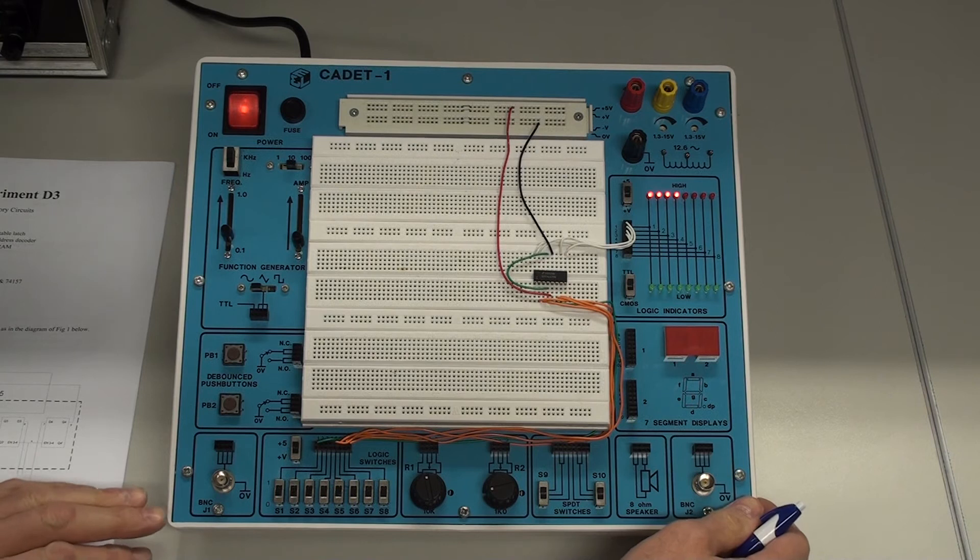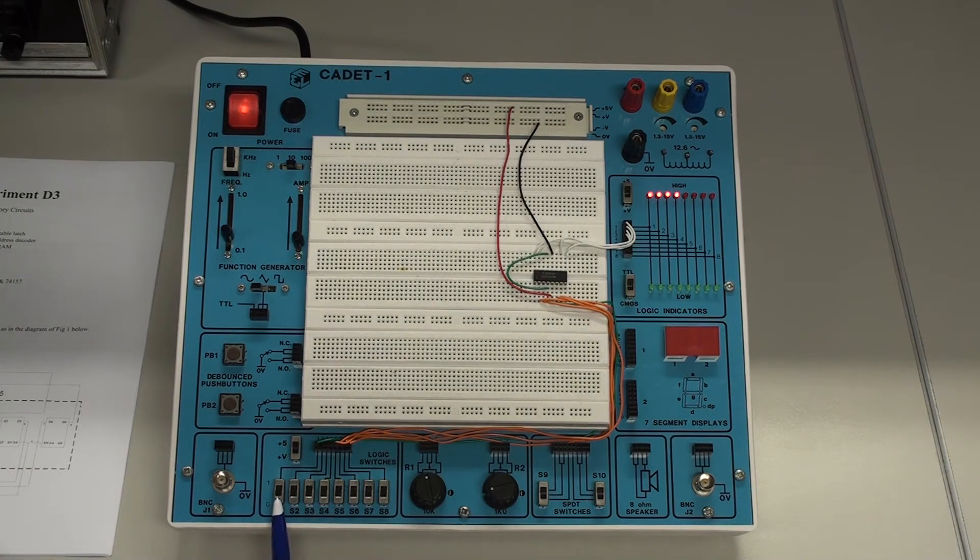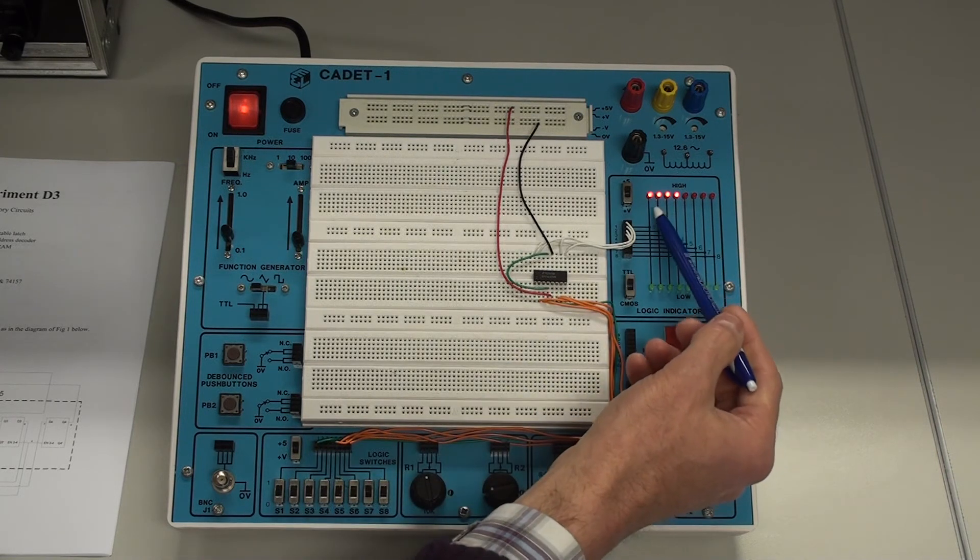Okay, well, we're just going to make sure that it works now. As I say, the enable line is set to zero. So flicking the switches or making any changes on the switches makes no difference to the output. And we can see that there.